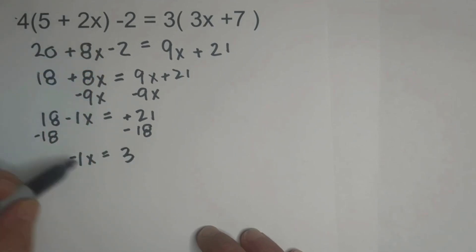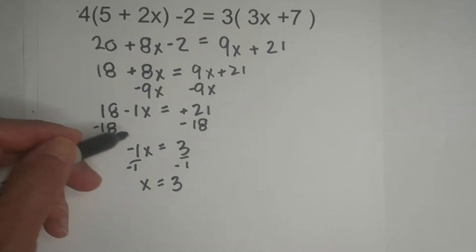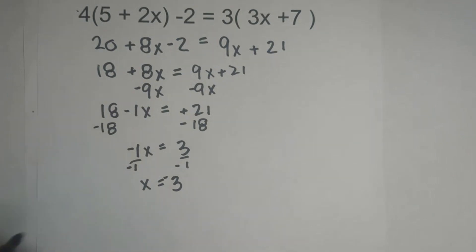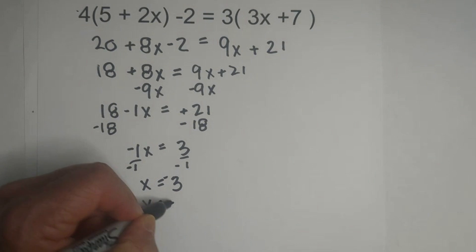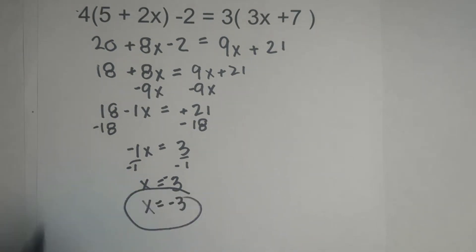We need to get rid of the negative 1, so we're going to divide through by negative 1. So that gives us x is negative 3. Let me rewrite this, x equals negative 3. I'll circle it.